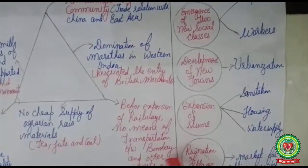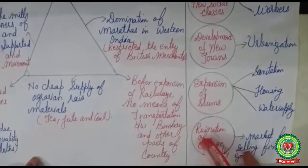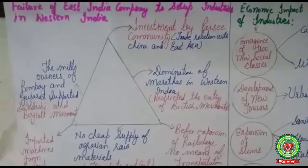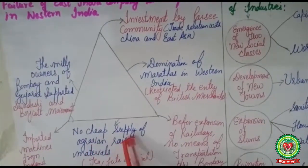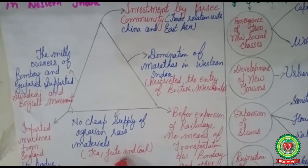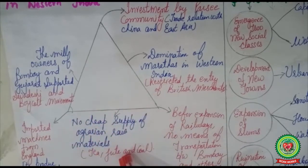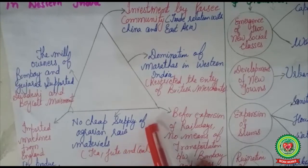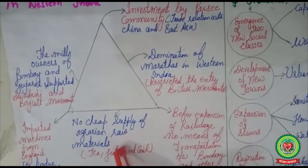Before the expansion of railways, no means of transportation existed between Bombay and other parts of the country, so the East India Company was not successful in setting up industry there. Also, there was no cheap supply of agrarian raw materials like tea, jute, and coal, which were only available in the eastern part of India, especially Calcutta. The western part was mainly known for cotton, and they were not able to get the supply of agrarian raw materials from western parts.